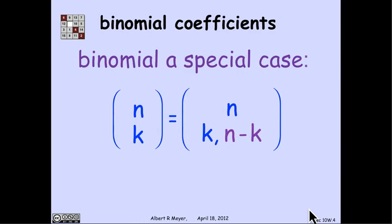Binomial coefficients, by the way, are a special case. When we write n choose k, if we wrote it as a multinomial coefficient, you'd have to write it as n choose k and then choose n minus k.